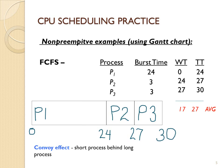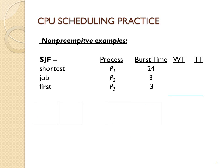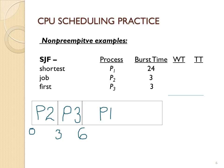Now we'll do the same exercise using Shortest Job First. They all arrive at time zero, but we run them in order of shortest first and longer ones in the back. So P2 goes first for three time units, followed by P3 for three time units, followed by P1 for 24 time units. The total time is still 30 time units, but this changes the wait times and turnaround times.